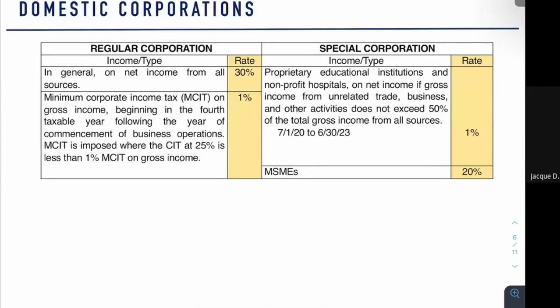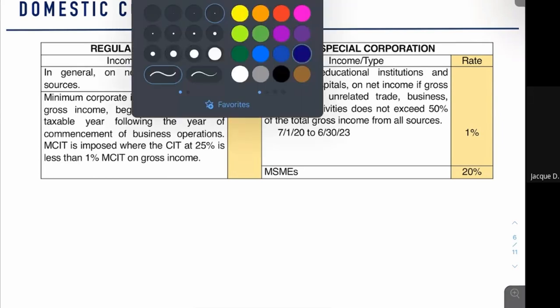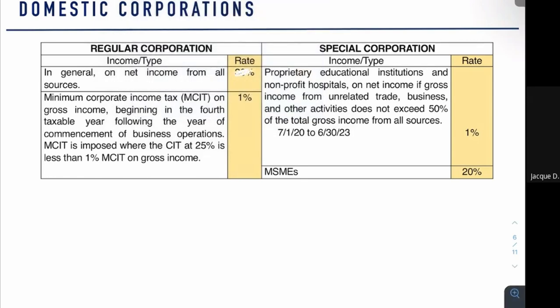For domestic corporations, as a general rule, the net income is taxed at 25%. However, it is subject to Minimum Corporate Income Tax (MCIT) of 1% if ever the corporate income tax is less than the 1% MCIT. We will discuss that later. Now let's go to special corporations.